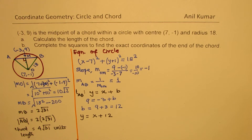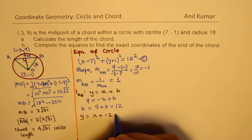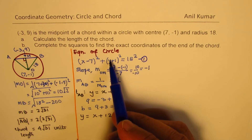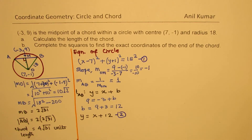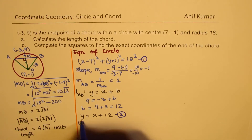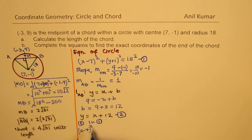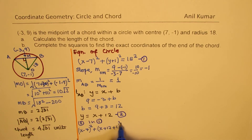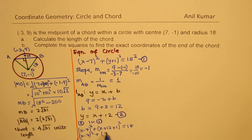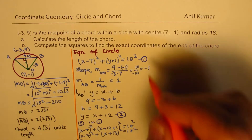Now we have two equations: the equation of the circle and the equation of the line. We substitute y = x + 12 into the circle equation. So we get (x − 7) squared plus (x + 12 + 1) squared equals 18 squared, which simplifies to (x − 7) squared plus (x + 13) squared equals 18 squared. We now have a quadratic equation in x.